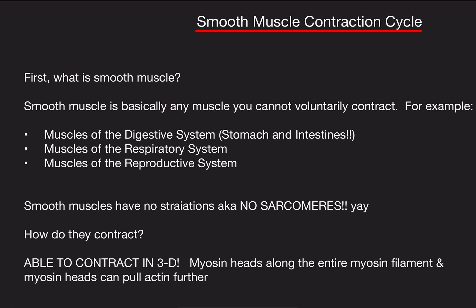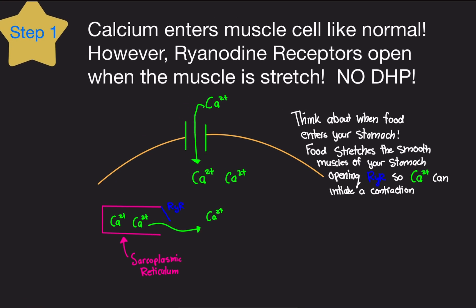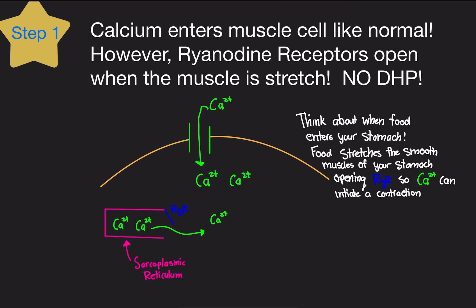This actually confuses a lot of students — they think we just covered this. We did cover the muscle contraction cycle, but that was for skeletal muscle. There's a big difference. Skeletal muscle includes your bicep, back, legs — stuff you can contract willingly. Smooth muscles you cannot. Think about your internal organs — that's what we're talking about here.